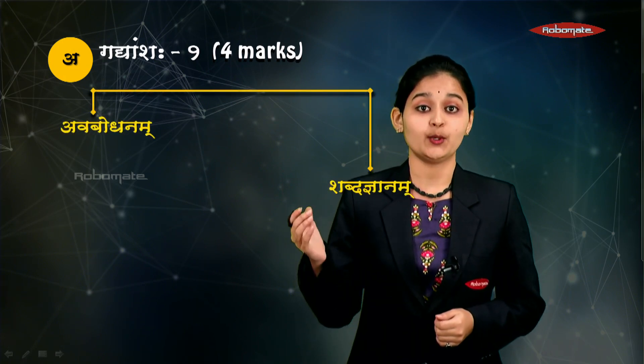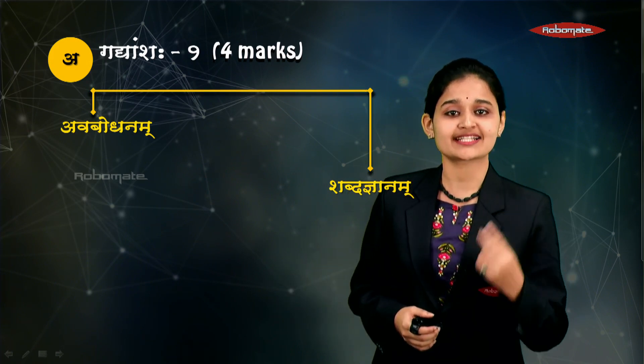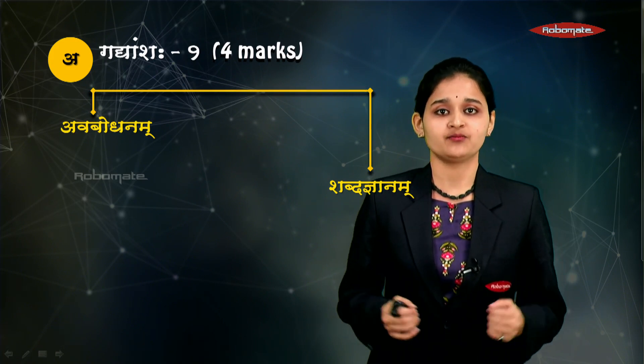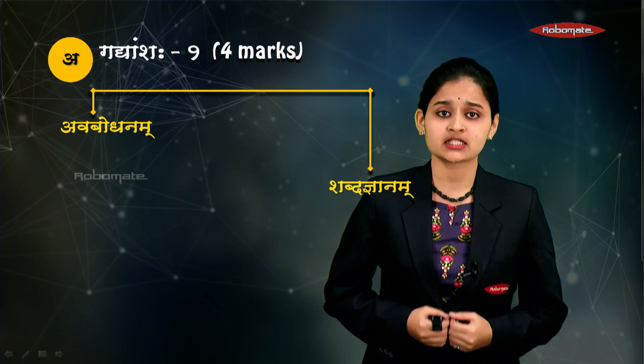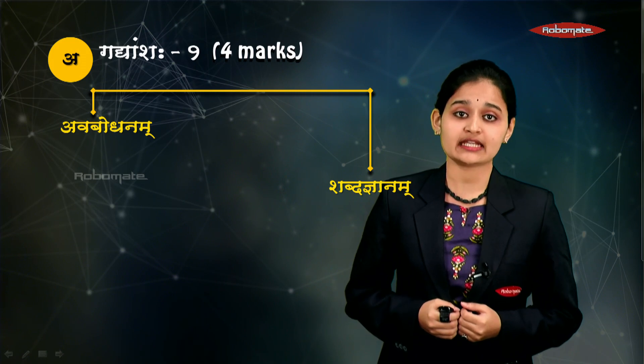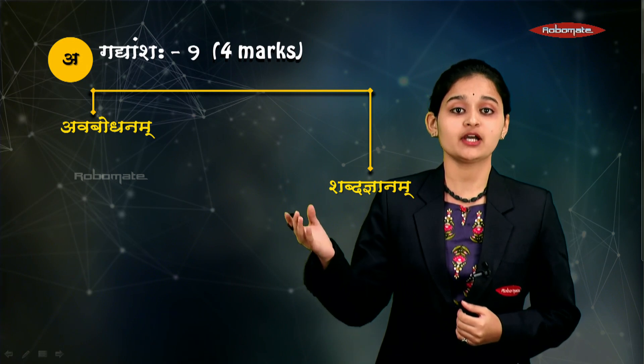In Gadya Vibhag there are only two passages, each of 80 to 100 words, and each is for four marks. In each passage there are two question types: first is avabodhanam, meaning comprehension, which is for two marks, and after that we have Shabdat Jnanam, which means vocabulary-based questions, also carrying two marks.